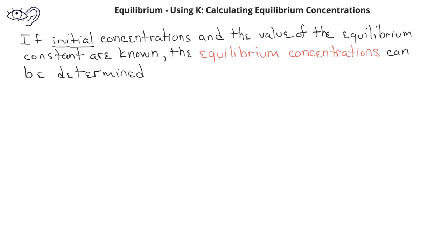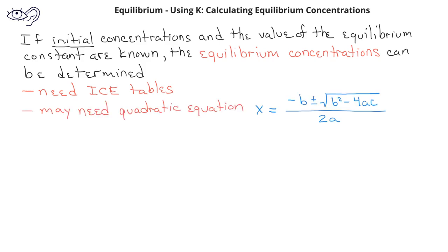In order to do this, we will again need our ICE table. In many situations, we'll also need the quadratic equation. The main difference in using the ICE table in this case is that we do not know any of the equilibrium concentrations. We also do not know any of the change amounts for the ICE table.